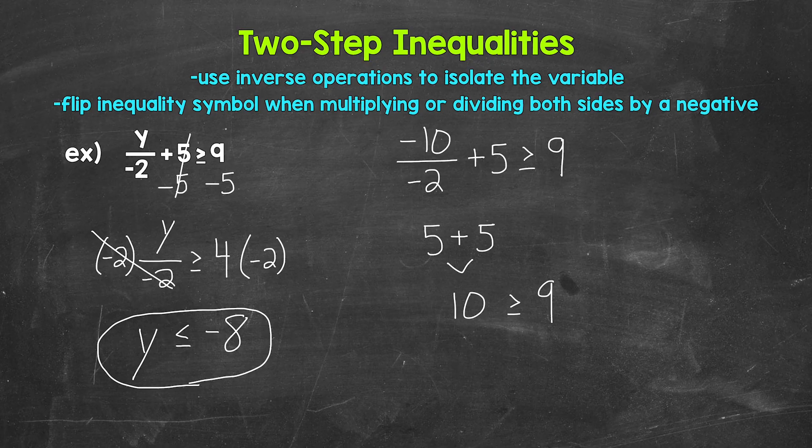And since y can be equal to negative eight, let's try that as well. So we have negative eight divided by negative two plus five. Negative eight divided by negative two gives us four. Four plus five gives us nine. And nine is greater than or equal to nine, so that works as well.